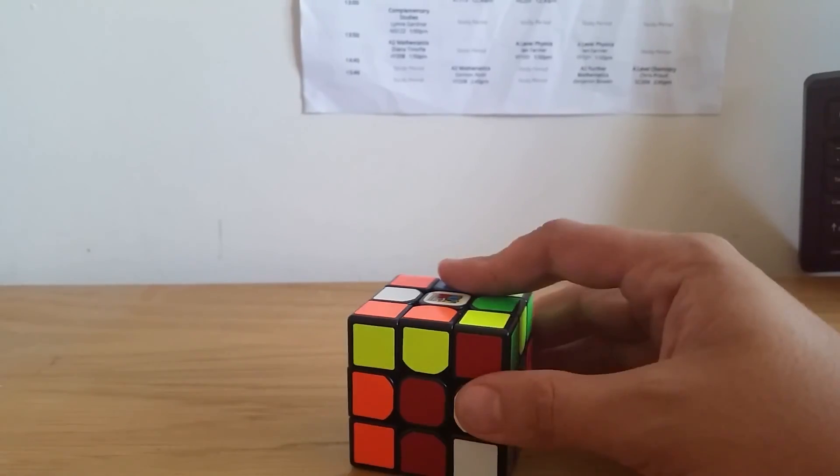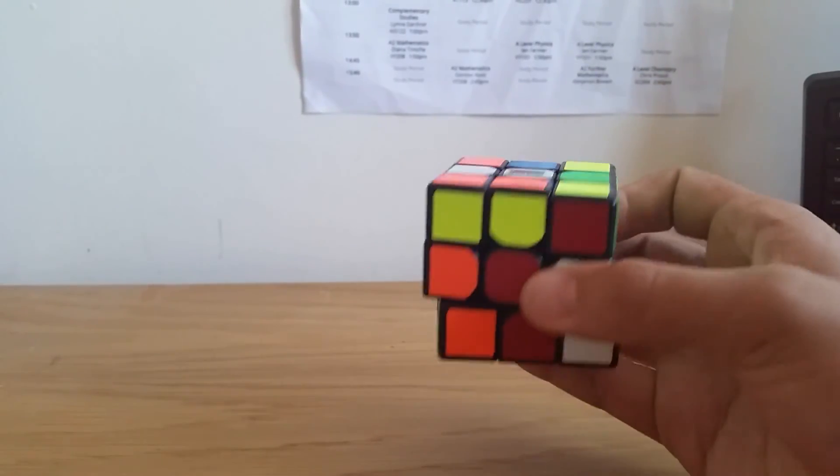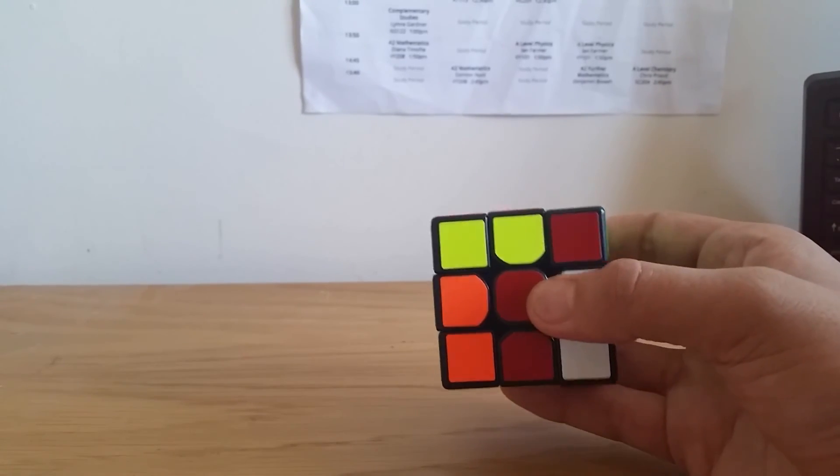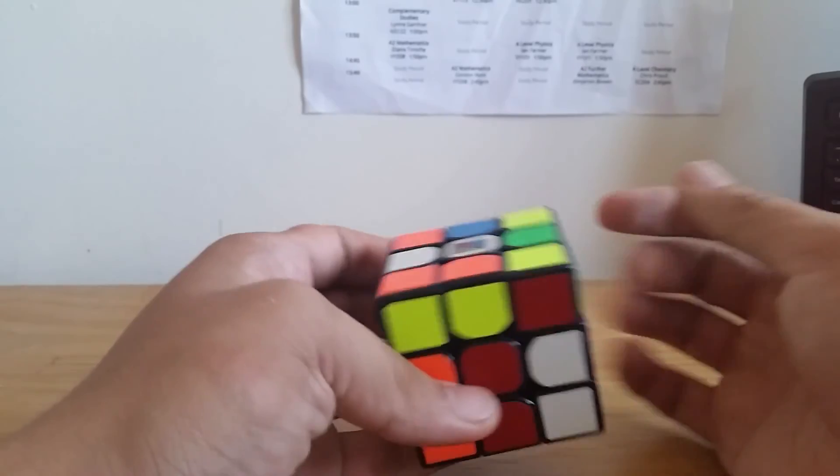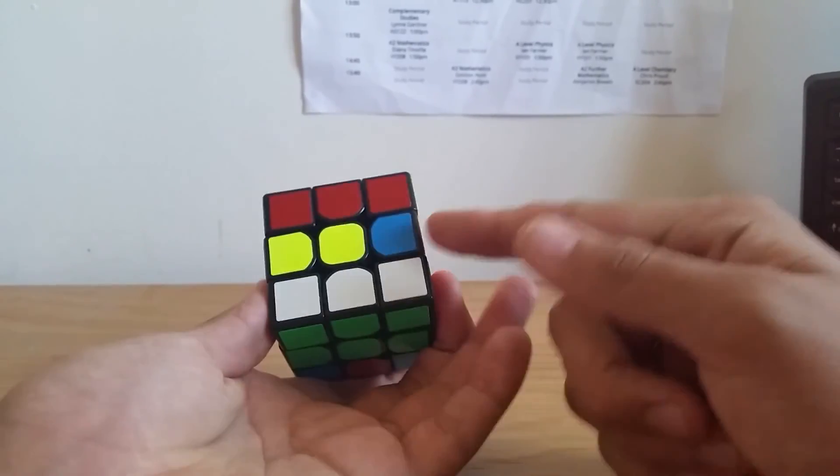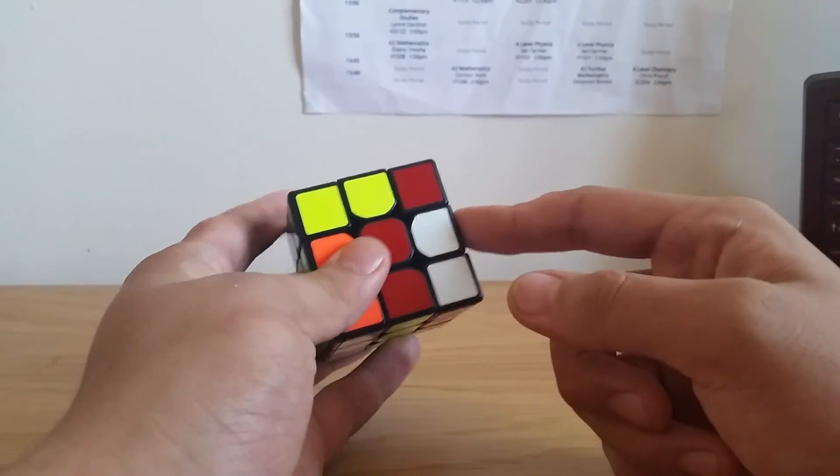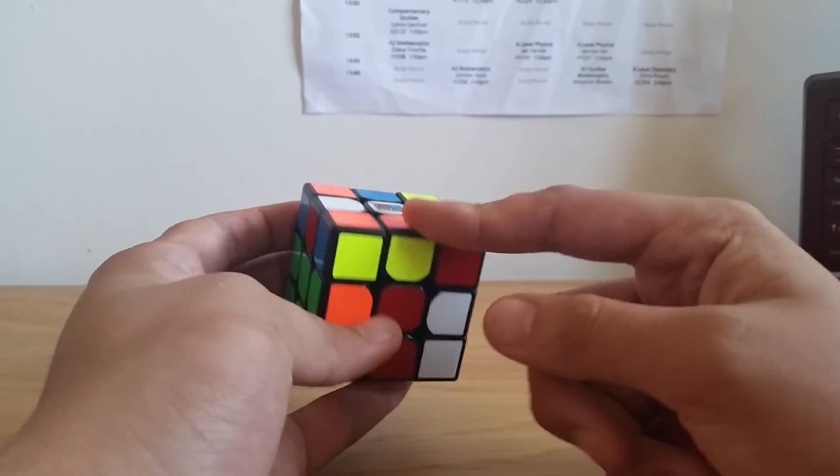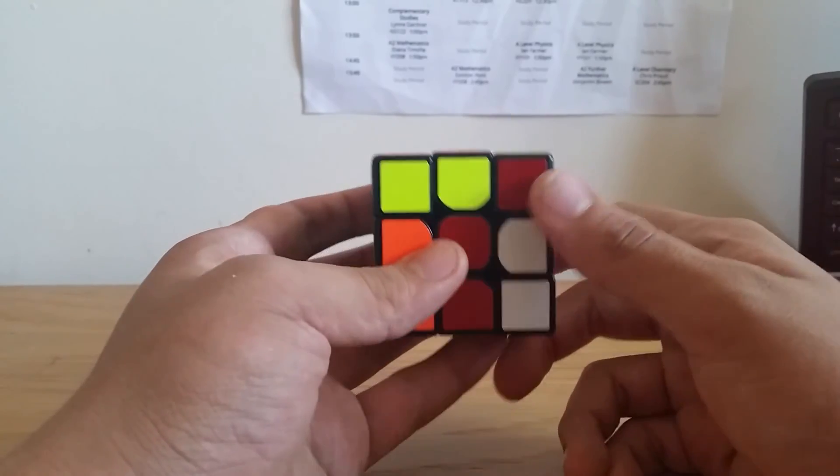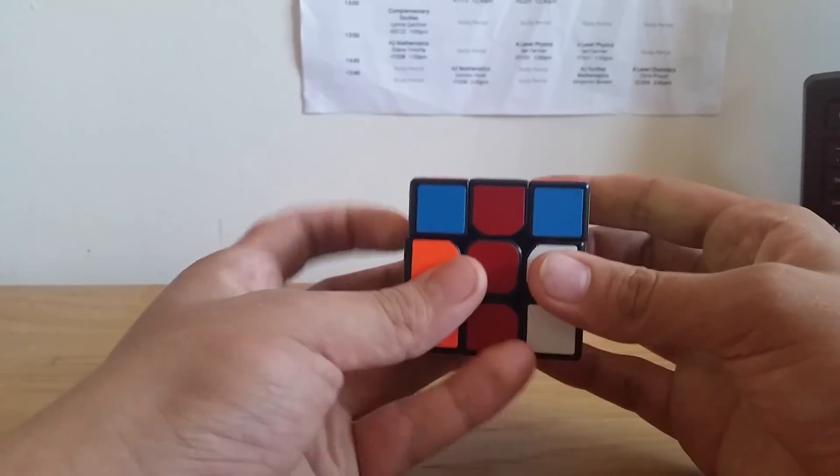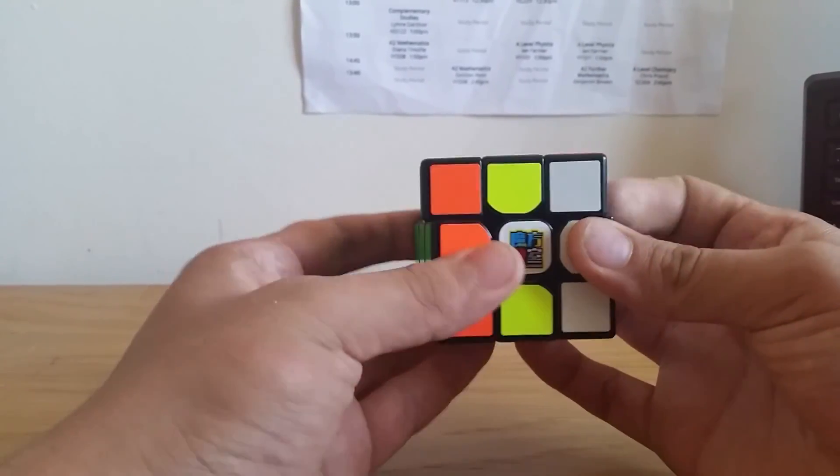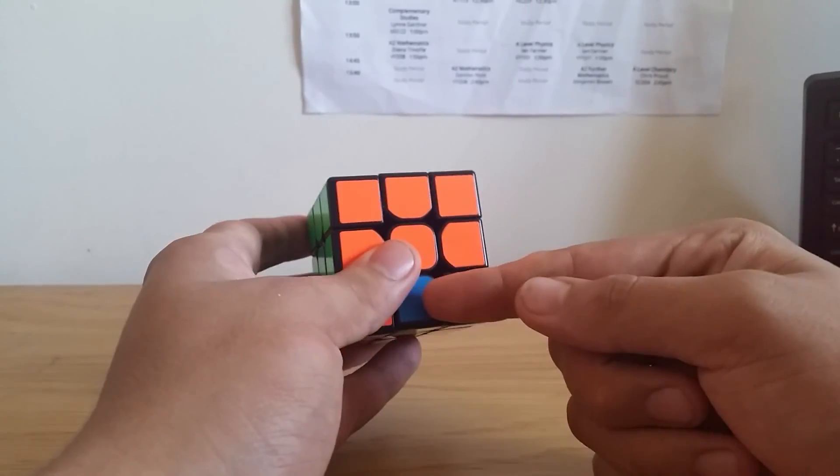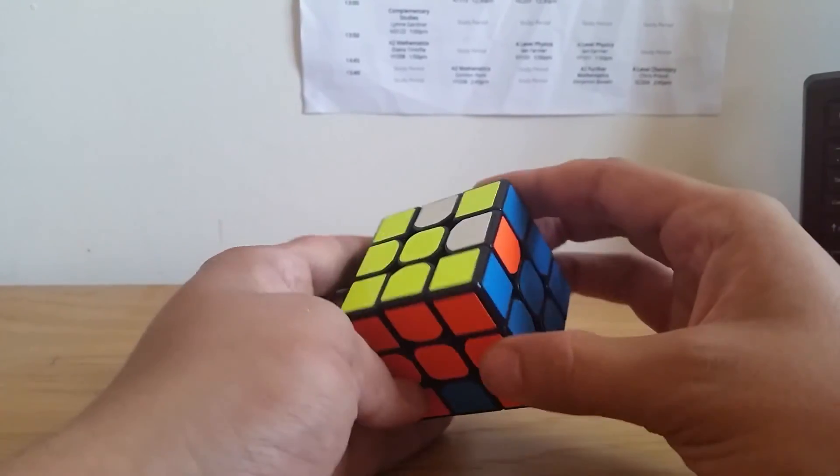So, instead of that really basic thing that I did last time, I'm going to do something ever so slightly more complicated. I'm going to solve this piece, the FR edge, which should go there, while orienting the edges. Not as hard as it sounds. So, we want... Done. Everything's oriented, and now it's just an oriented LSE case.